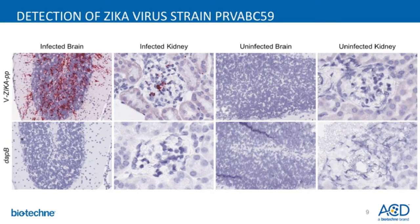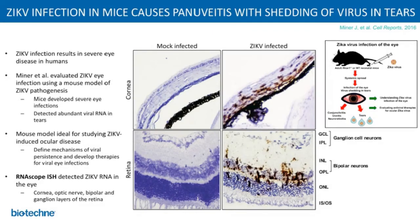Here is an example of the use of RNA Scope in infectious disease for the early detection of emerging Zika virus. We were able to rapidly generate probes specific for several strains of viruses, and in collaboration with James Bryan at Texas A&M School of Medicine, we were able to detect the strain PRVAB-C59, which detects the Puerto Rican, Asian, and Brazilian strains of Zika virus in mouse tissue infected with the virus, but not in uninfected tissues. This publication is from Miner et al. from Washington University, St. Louis, showing the use of RNA Scope in Zika viral detection.